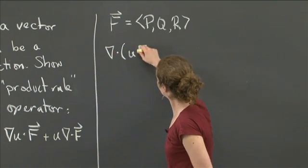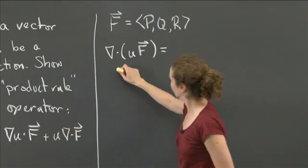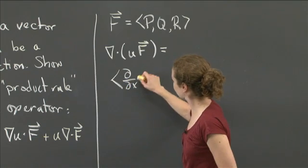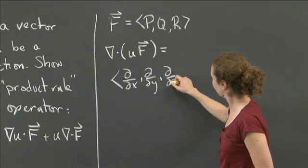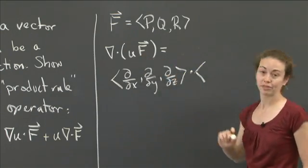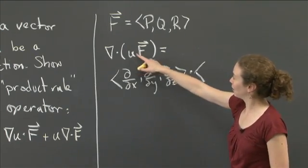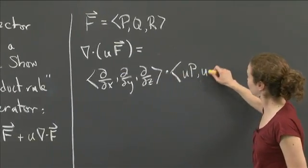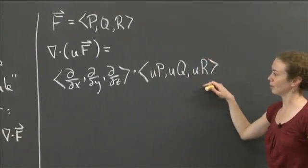So remember that del dotted with any vector field is supposed to be symbolically what was written: you should think about this as del/dx, del/dy, del/dz dotted with this vector field uF. Now what is this vector field? Because u is a scalar, when I multiply u by the vector field F, the components are going to be uP, uQ, uR. So those are my components.